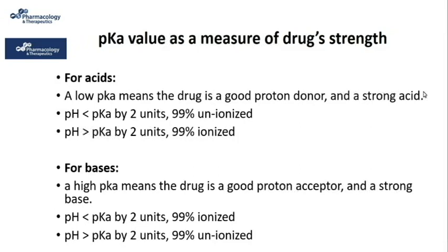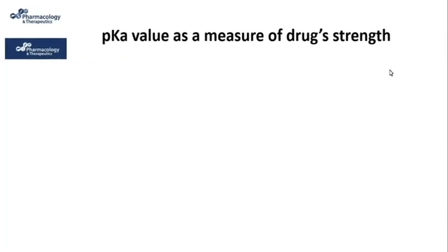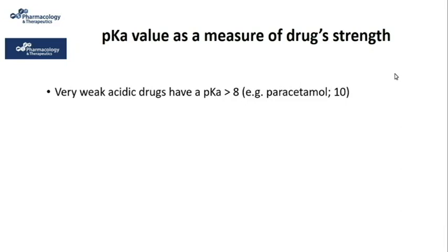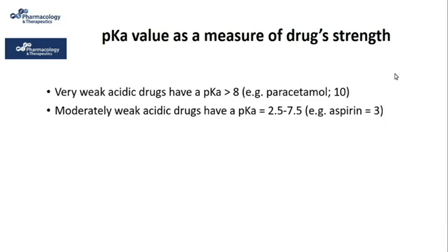The literature mentions further classifications. Very weakly acidic drugs have a pKa greater than 8 — for example, paracetamol with pKa = 10. Moderately weakly acidic drugs have a pKa between 2.5 and 7.5 — for example, aspirin with pKa = 3.